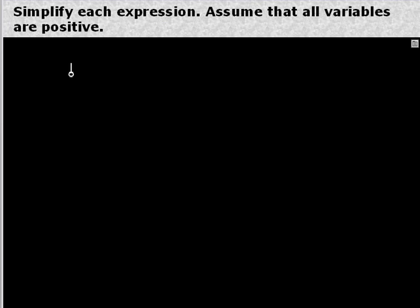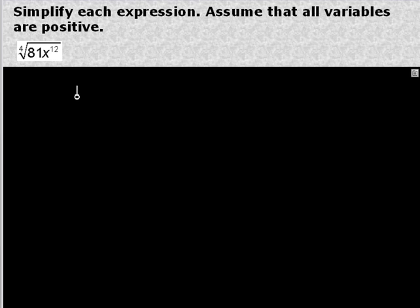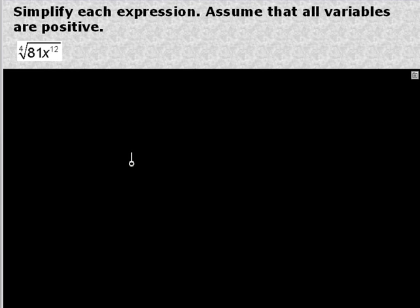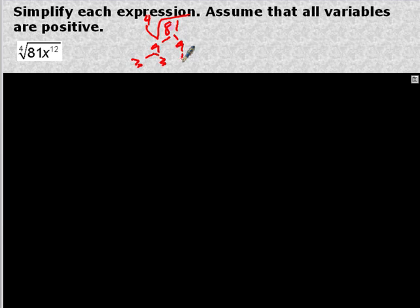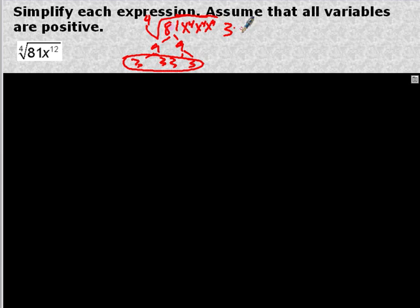Simplify each expression — assume all variables are positive. For the fourth root, I'm looking for four of a kind instead of two of a kind. 81 factors into 9 and 9, then 3 and 3, 3 and 3 — so I have 4 of a kind and pull out a 3. The fourth root of 81 is 3. For x to the 12th, that's 12 x's — how many groups of 4? It's x to the 4th times x to the 4th times x to the 4th, giving 3 groups of 4 x's. For each group we pull out one x, so it's x times x times x.